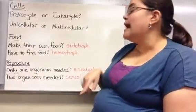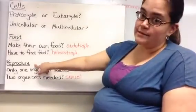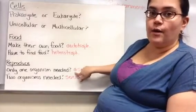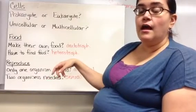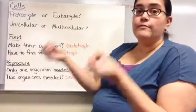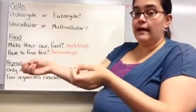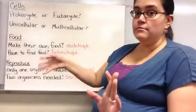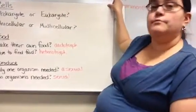The last question is how does the organism reproduce. If only one organism is needed to reproduce, that is called asexual reproduction. For example, bacteria and some worms can split in half to produce two organisms — that's asexual. If you need two organisms, a male and a female, that is called sexual reproduction. So: two organisms needed means sexual; only one means asexual.